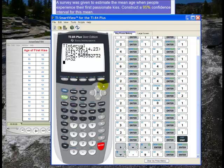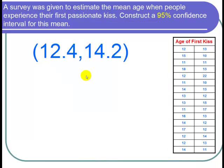So now let's go back to our PowerPoint. So I rounded to one decimal place and the confidence interval goes from 12.4 to 14.2.